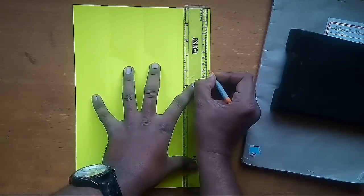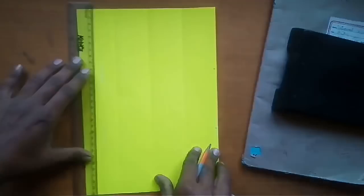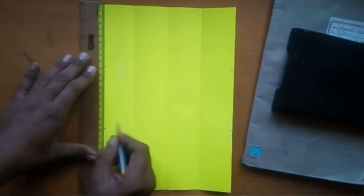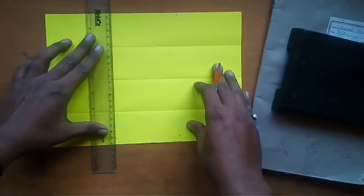This is A4 size sheet and its length is 29.7 cm. So I am dividing it into three equal parts of 9.9 cm.